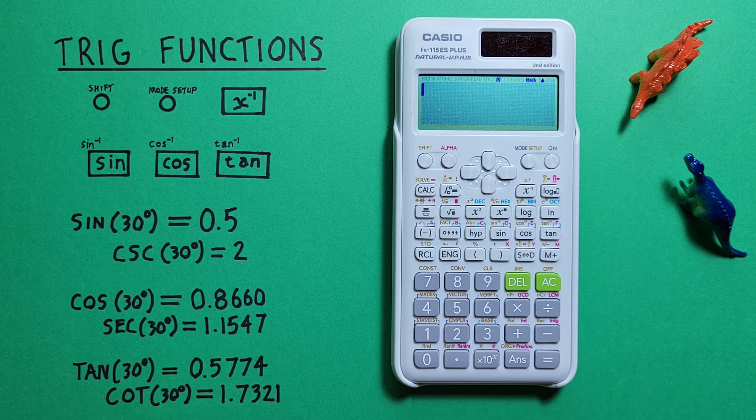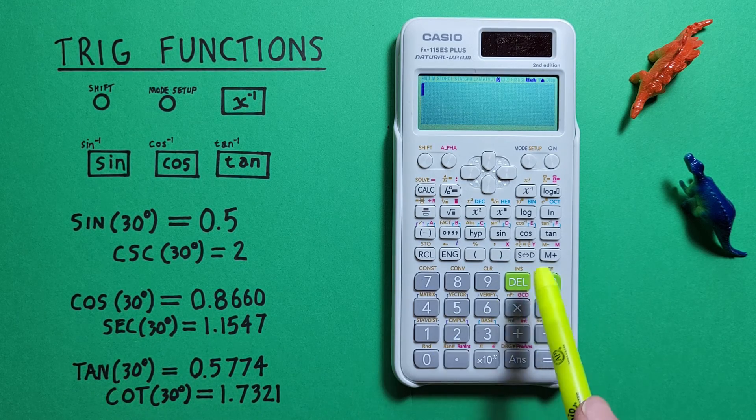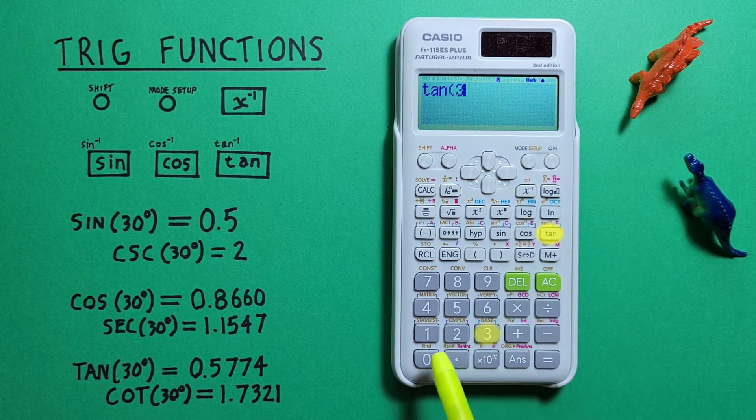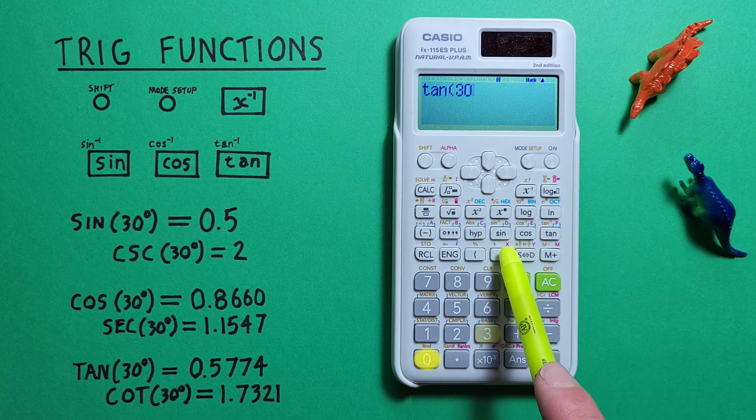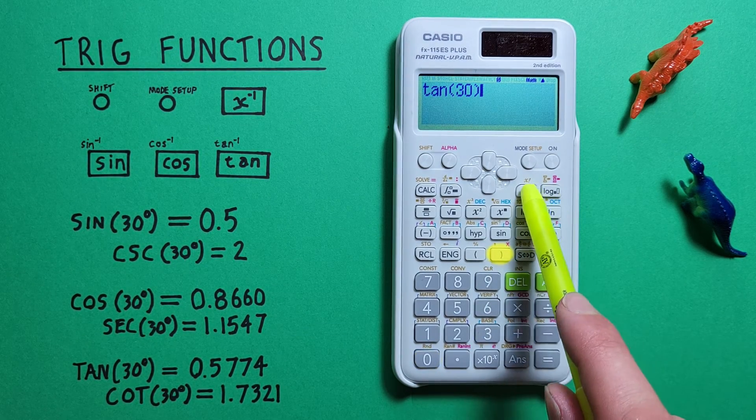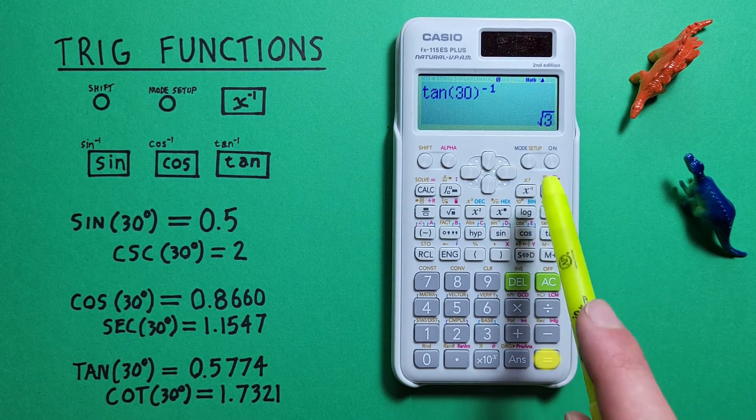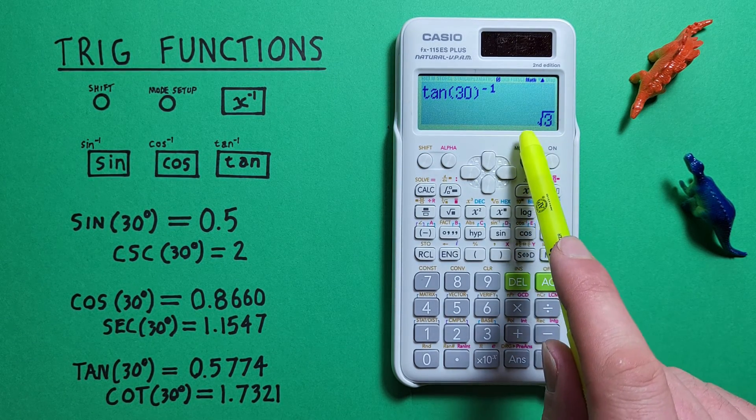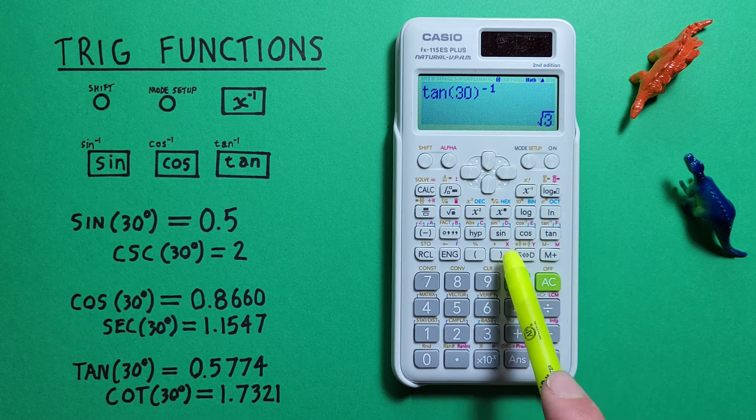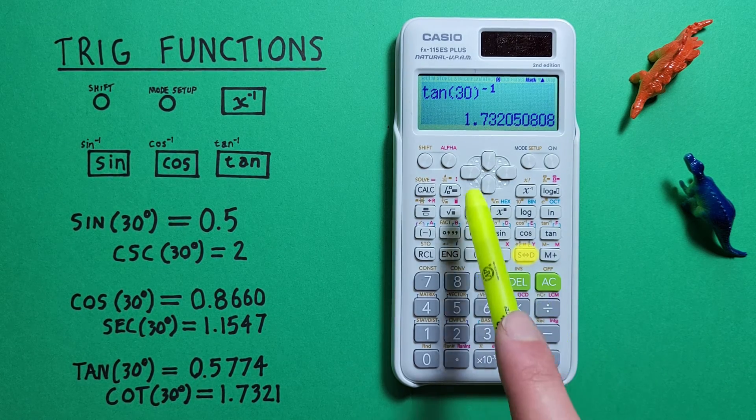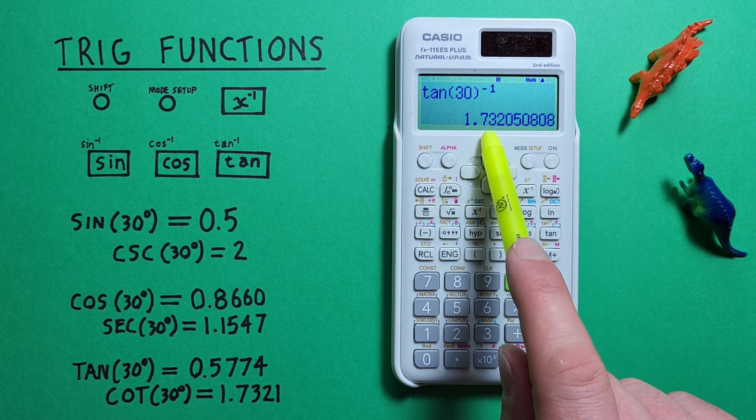For cotangent we use tan. So we hit tan of 30, close our bracket, and inverse equals, and we get a result of the square root of 3, which we can convert to a decimal of 1.7320, etc.